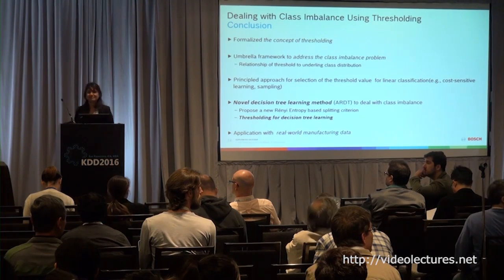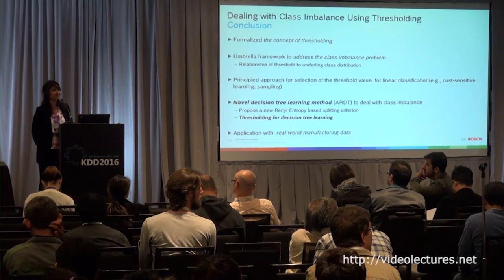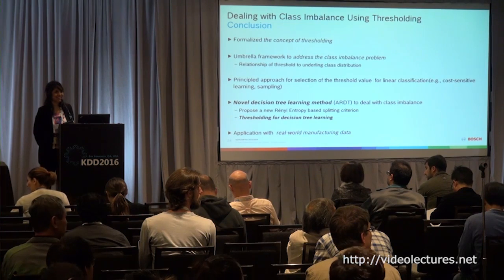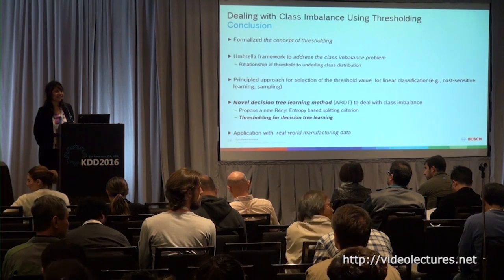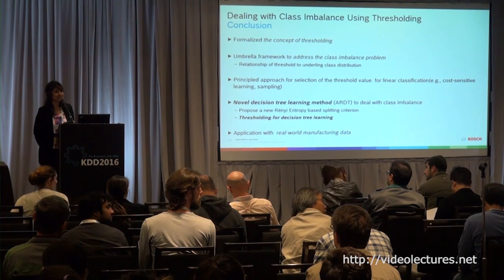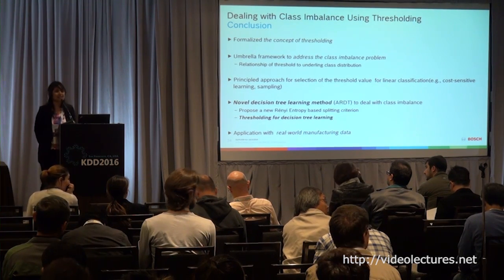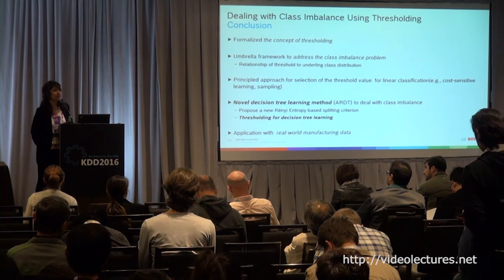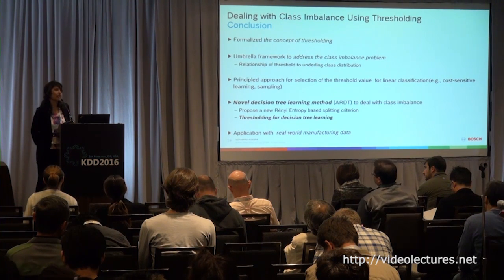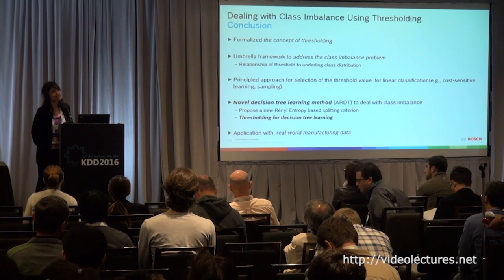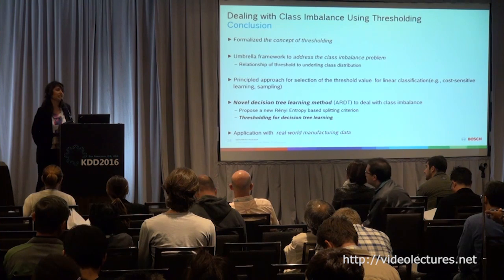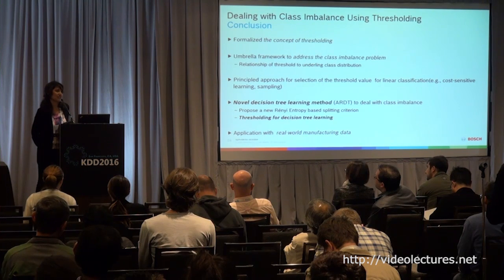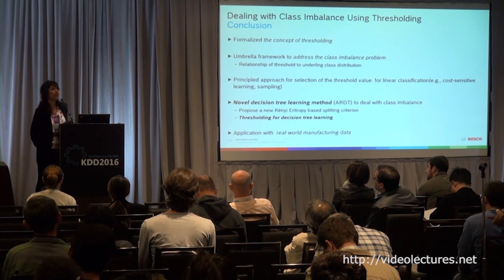Question: did you find some algorithms like random forest or logistic regression actually quite robust to imbalanced datasets, compared to something like SVM which is very sensitive to imbalance? The speaker responded: we tried random forest and found that the ARDT-based trees gave better results. The splitting criterion can also be applied to random forest, but one important factor was interpretability — it's more difficult to explain a random forest to a person on a manufacturing line as compared to a decision tree, so we focused mostly on decision trees.